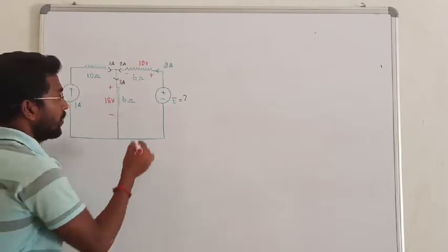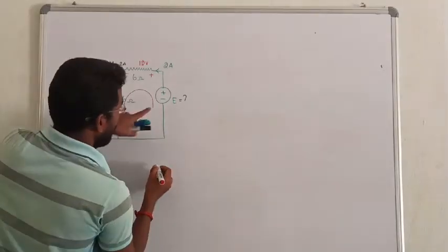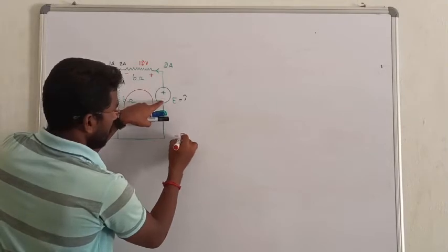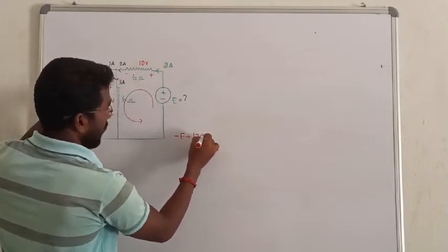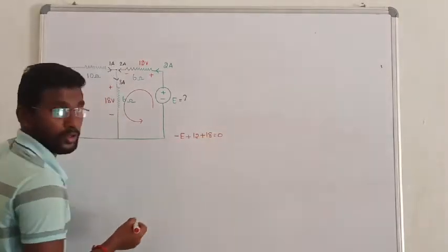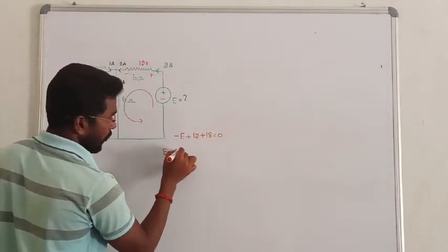Now, what is the value of E? Simply apply KVL. I am starting from here. Minus E plus 12 voltage plus 18 voltage equal to 0. So, what is the value of E? E is going to be 30 volt.